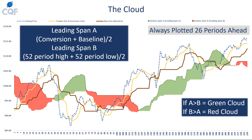Now let's plot the cloud with span A and span B. If span A is greater than span B, you get a green cloud. Both span A and span B are plotted 26 periods ahead. Span B is the average of the 52-period high and low, plotted 26 periods ahead — so first you go back 26 periods to calculate the 52-period high and low, and you need 52 periods of history for that point. Therefore, you need 78 periods of history in total to calculate the first leading span B value.